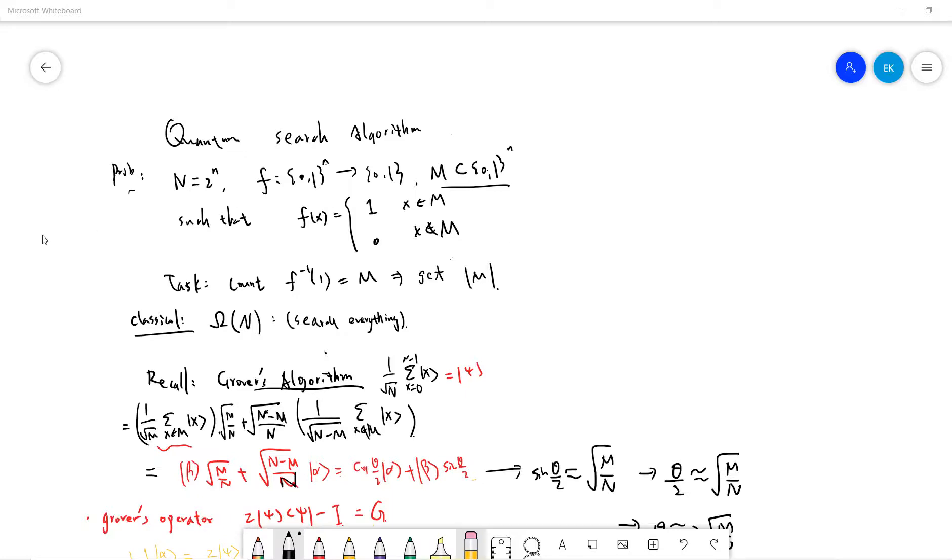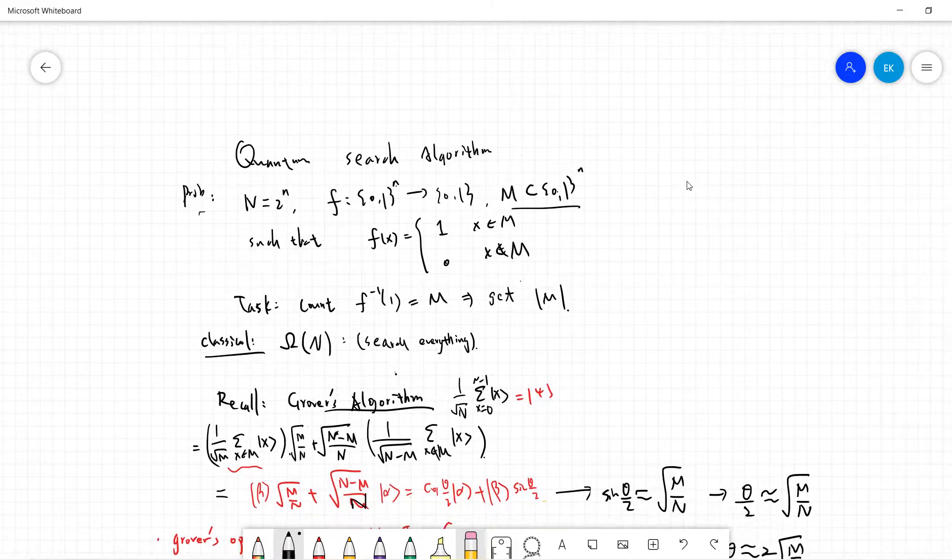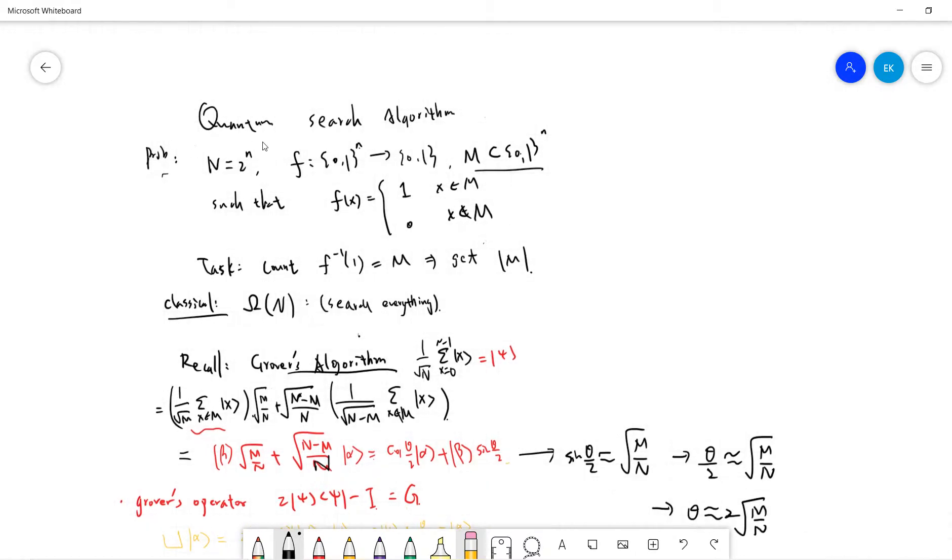Welcome guys. So in this video, I want to talk about this quantum search algorithm. It's like a generalization or other applications of Grover's algorithm. So let's talk about problems. The problem is that if you have capital N is 2 to n, where n is an integer, and then we have a map f from {0,1}^n to {0,1}.